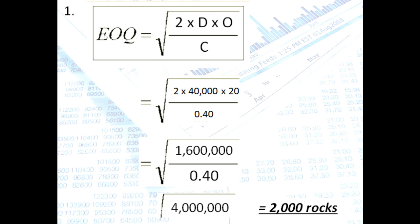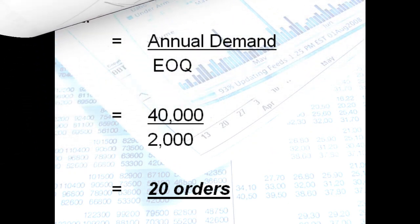So first, how are we going to compute for the economic order quantity or the EOQ? Let us use the formula, the square root of 2 times the annual demand in units times ordering cost per unit divided by carrying cost per unit. So let us substitute 2 times 40,000 times 20 divided by 0.40. So we get 1.6 million divided by 0.40. We get 4 million. Then get their square root. You arrive at 2,000 rocks.